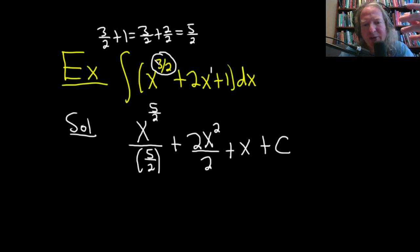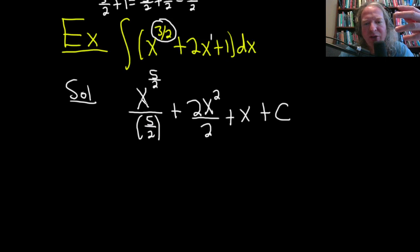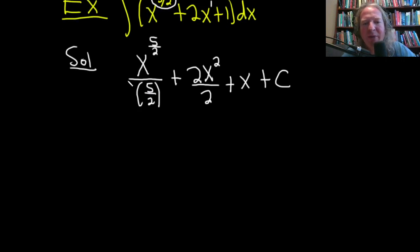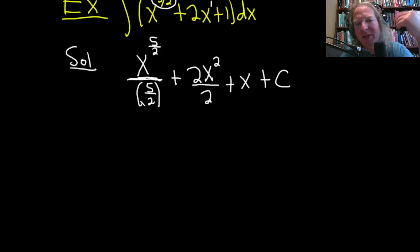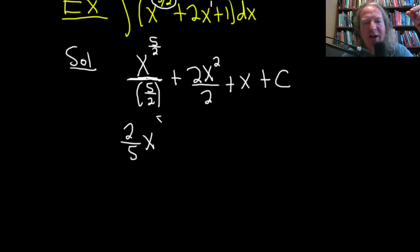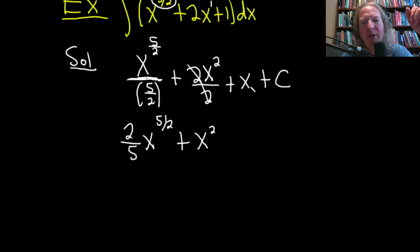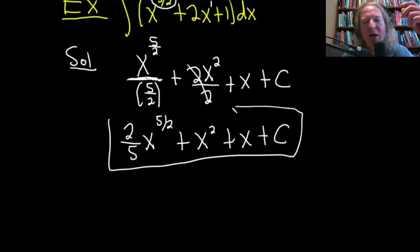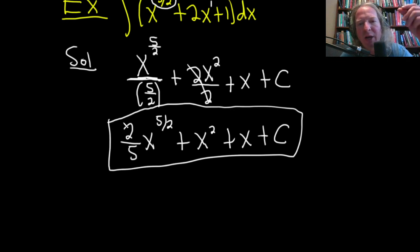We're still missing the plus C. The answer isn't simplified — there's a complex fraction — so let's clean it up. Dividing by 5/2 is really multiplying by the reciprocal, so this becomes 2/5 times x to the 5/2. That simplifies things, plus x squared.